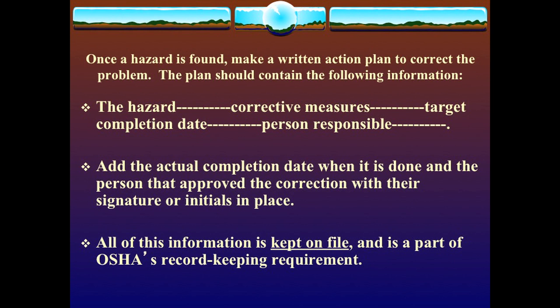Once a hazard is found, make a written action plan to correct the problem. The plan should contain: what the hazard was, how it's going to be corrected, your target completion date, and the person responsible — whoever conducted the inspection. Add the actual completion date when it is done and the person who approved the correction with their signature or initials.